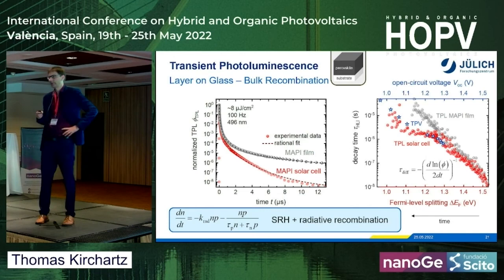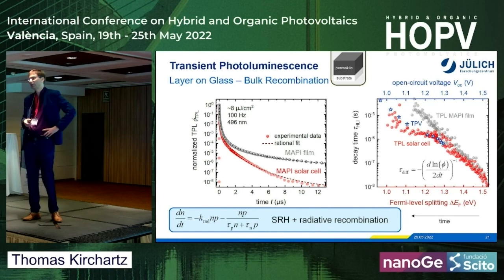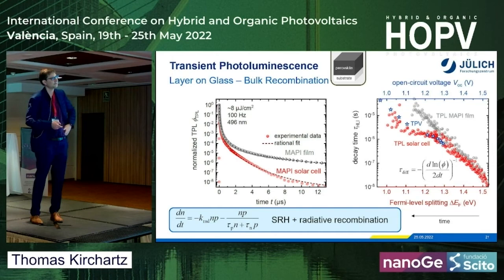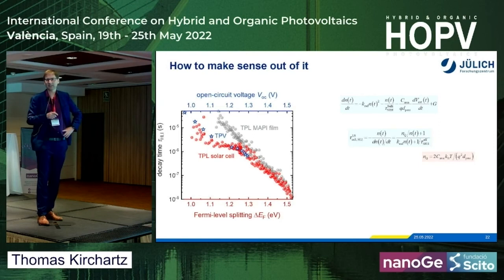Taking the derivative of the raw TPL data gives a noisy decay time, which can be smoothed. The TPV data appears as stars in the same plot, and now it actually makes a lot more sense. They're not perfectly on top of each other, but they follow a very similar trend — TPV and TPL on a cell are actually quite comparable. The final question is: what produces this funny-looking shape of decay time versus Fermi-level splitting?